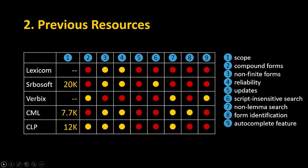Verbix lacks non-finite forms and also possesses a lot of unreliable data. When I started searching, there were many forms I couldn't approve, and there were also encoding problems with some characters that do not exist in Serbian. The problem is that all of these resources are not regularly updated — they were perhaps done once and since then left as-is, even though neological processes are very active.